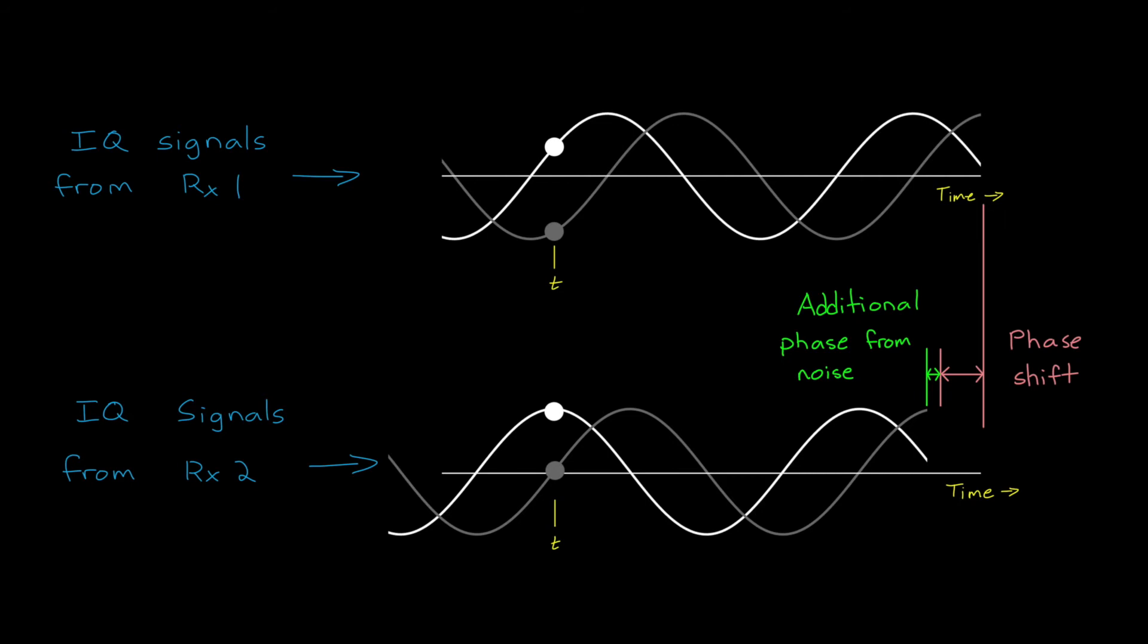Of course, we don't actually find the phase shift by manually shifting signals around like this. This is just a way to visualize how it's possible to calculate angles from two separate antennas. Instead of this, we use a Fourier transform to calculate the angles. And we're going to come back to that in just a bit, so hold that thought.